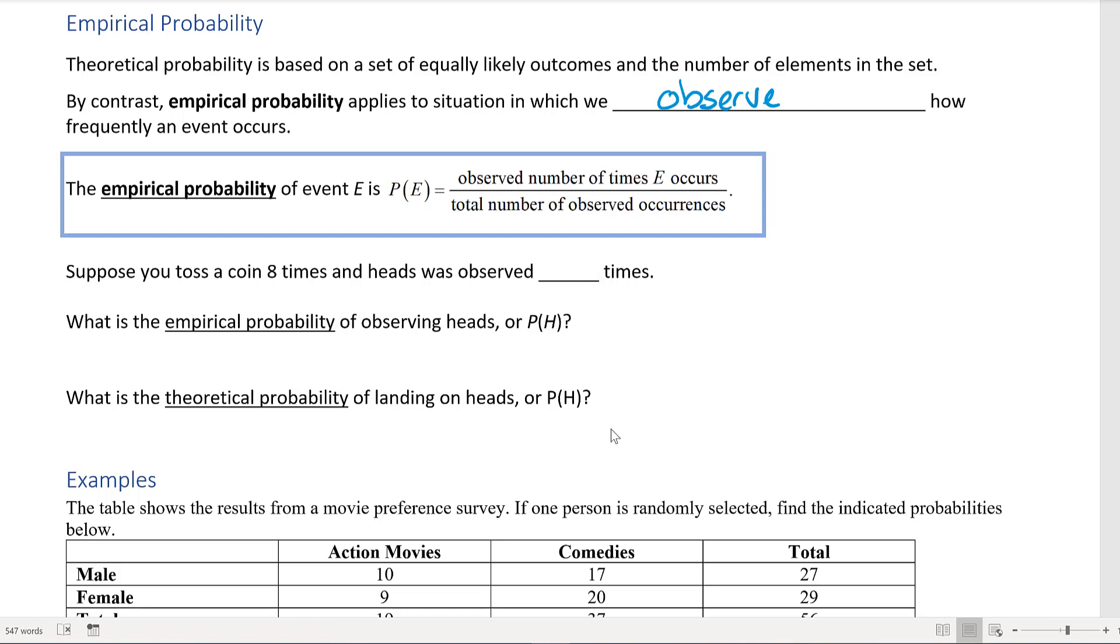Often when we're talking about heads or tails, a deck of cards, or a die, we're just thinking about it in terms of what could have happened. But we could actually do an experiment here. Suppose you toss a coin eight times and heads was observed—well, let's actually do it. Let's find out how many times this might happen.